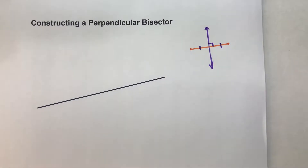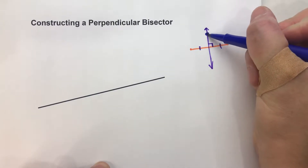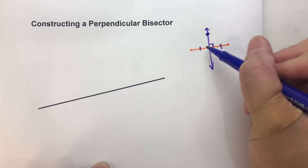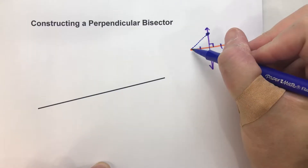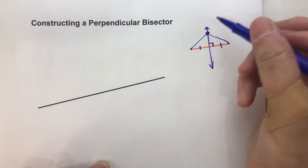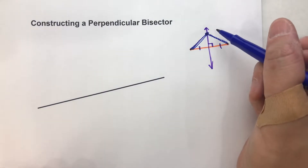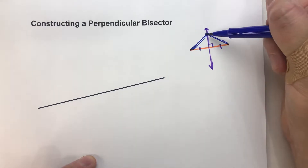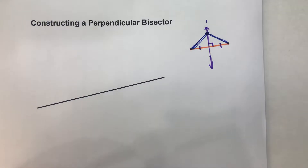Now, one of the properties of a perpendicular bisector is that any point on this perpendicular bisector — for example, this point up here — any point on a perpendicular bisector is equidistant to the ends of the segment. In other words, this point is the same distance to this end of the segment as it is to this end of the segment. These distances are the same. Now, why is that helpful? Because we can use that property to construct the perpendicular bisector. What we basically need to do is find two points that are equidistant from the ends of the segment, and draw a line through them, and that's your perpendicular bisector.